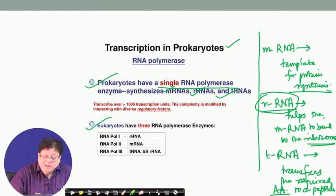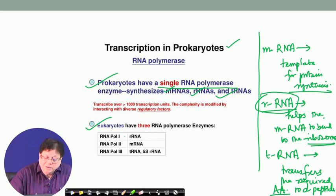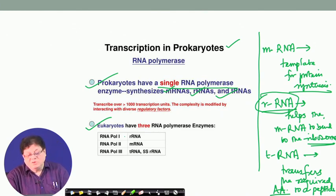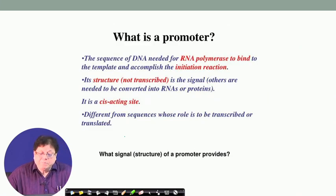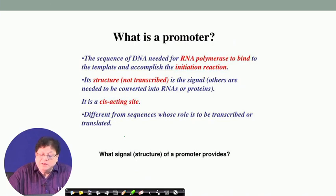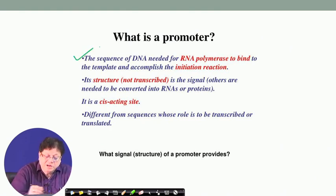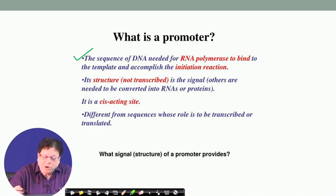Eukaryotes, on the other hand, have three RNA polymerases. RNA polymerase 1 synthesizes ribosomal RNA, RNA polymerase 2 synthesizes messenger RNA, and RNA polymerase 3 synthesizes tRNA and also part of the ribosomal RNA. The promoter is the sequence of DNA needed for RNA polymerase to bind to the template and accomplish the initiation reaction.